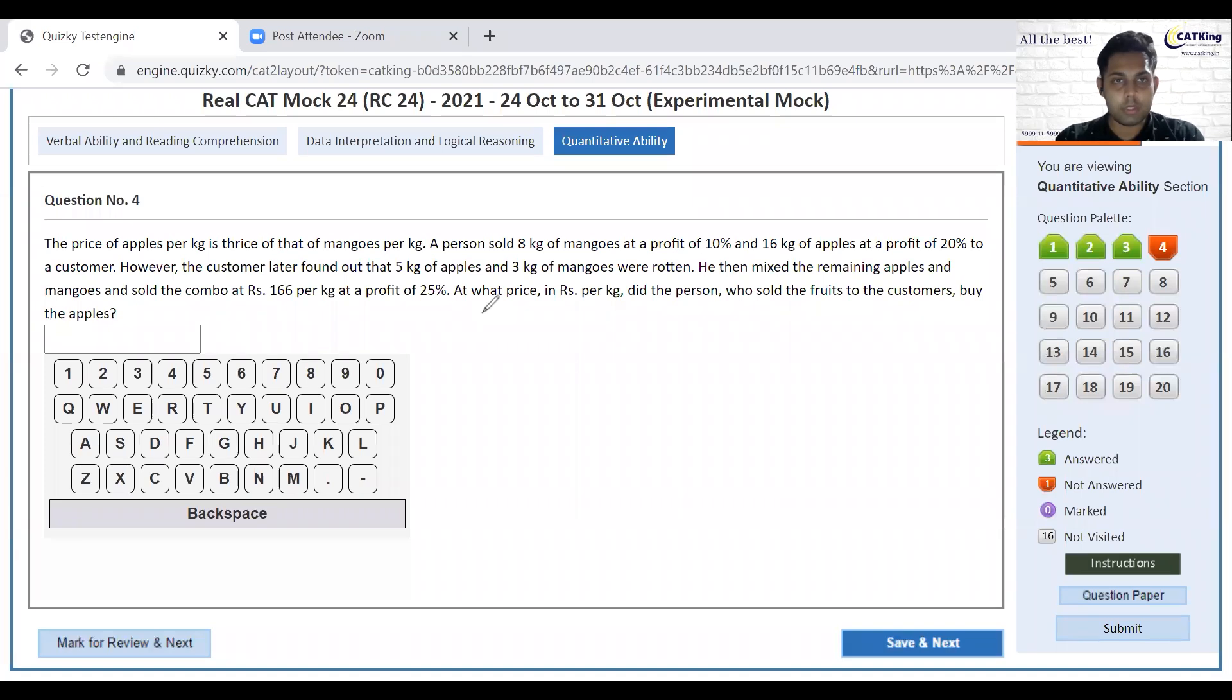The price of apples is thrice per mango. Mango is x. Apple is 3x. 8 kg of mango at 10% profit. 1.1x. 5 kg of apple and 3 kg of apple. Too much mixture for variables. Mark and review.